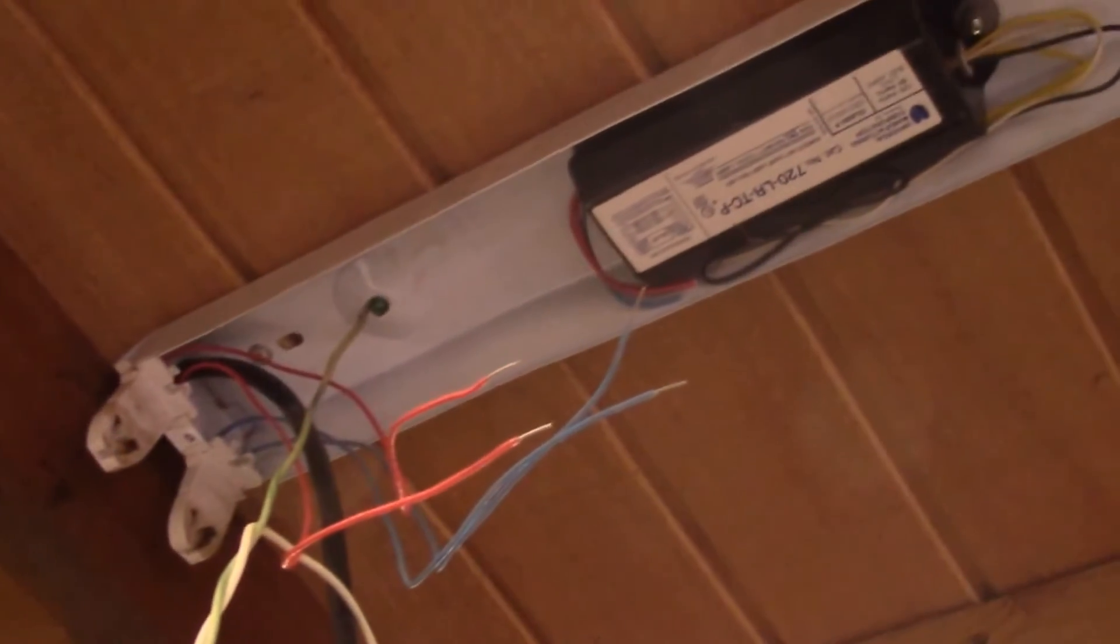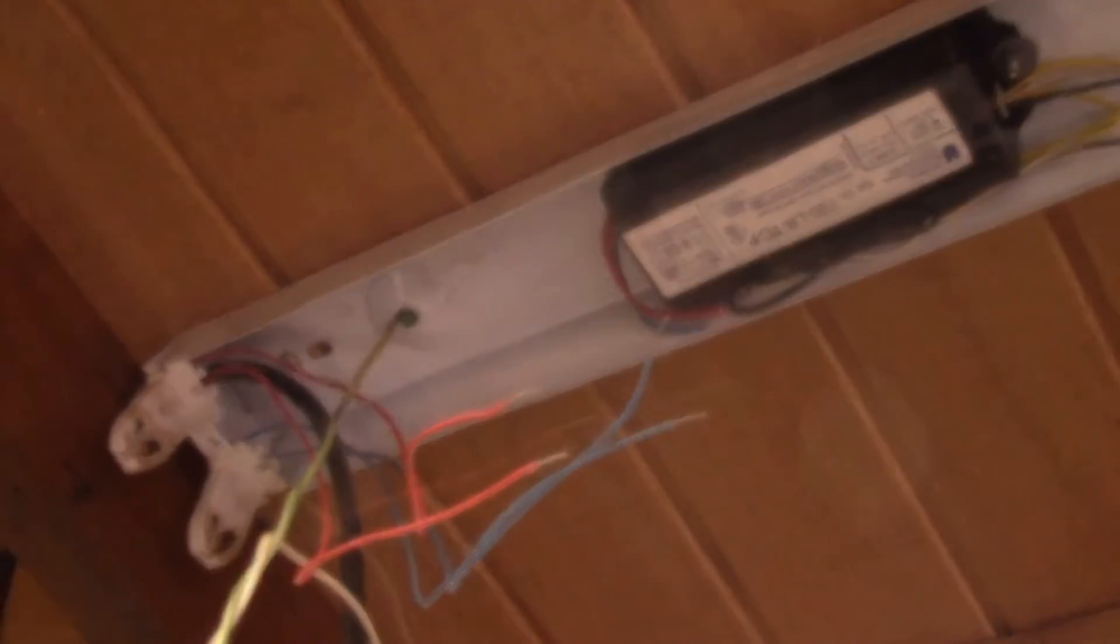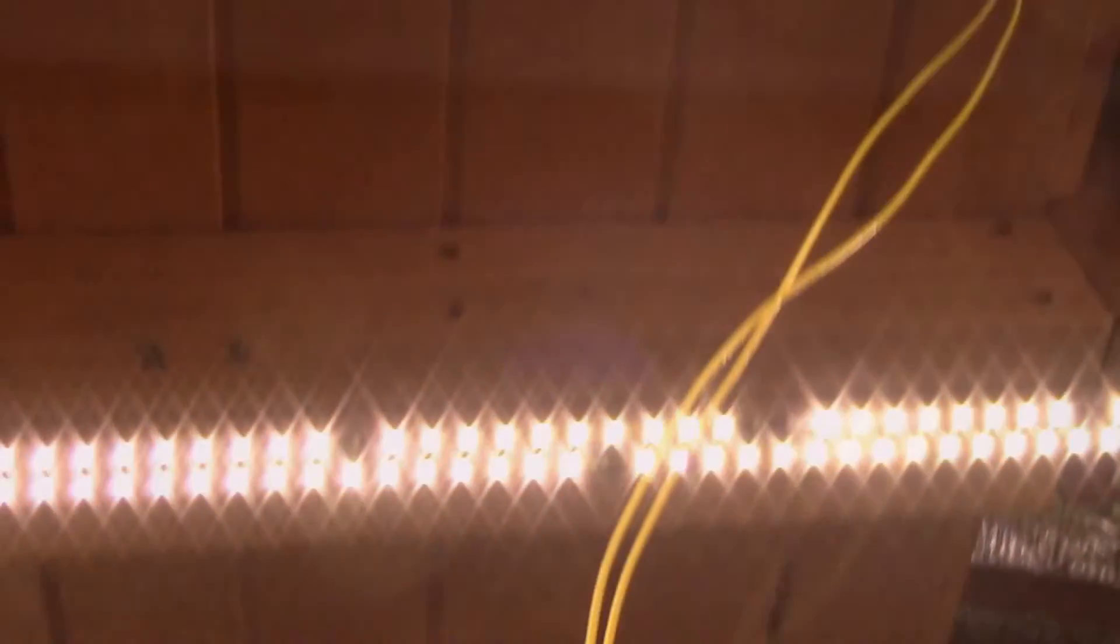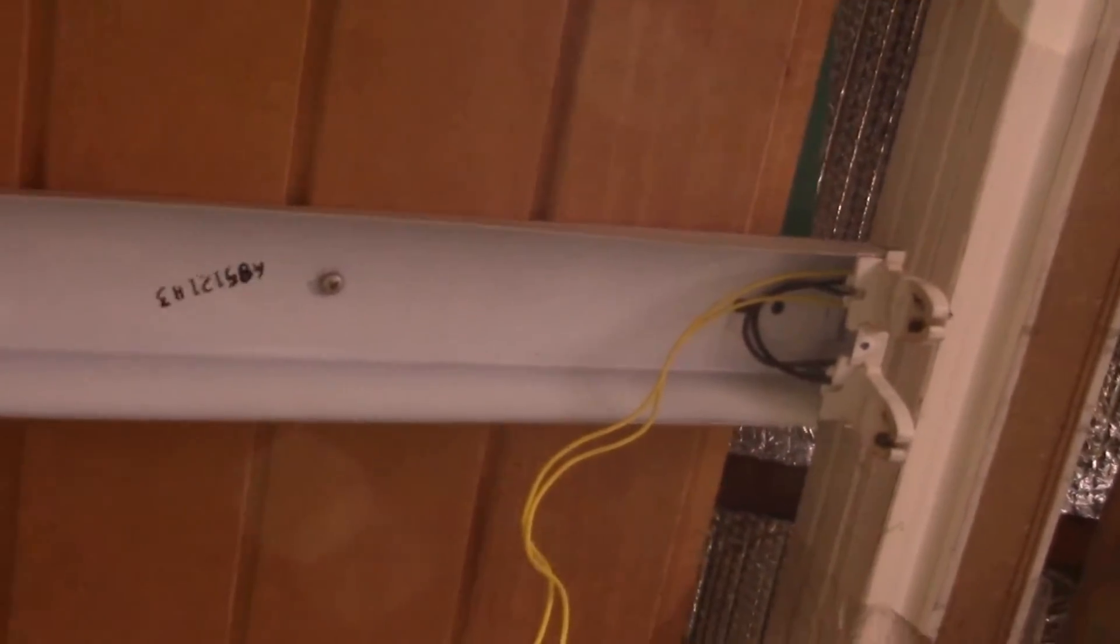I've got the yellow wires stripped—they're way down there—and they'll run to that end. So I'll have the hot on that end and I'll have the neutral over here, the ground screw. And then you can see the ballast. I've just tucked all the wires out of the way.